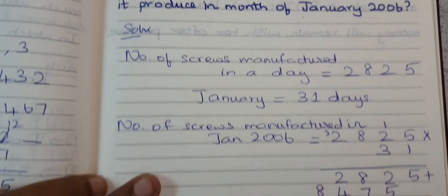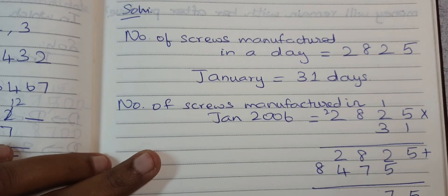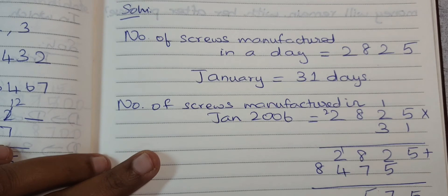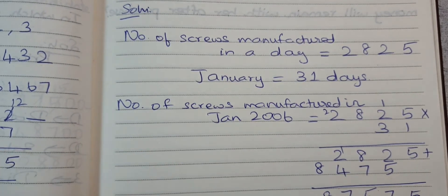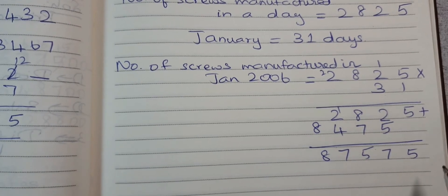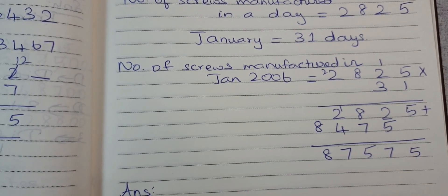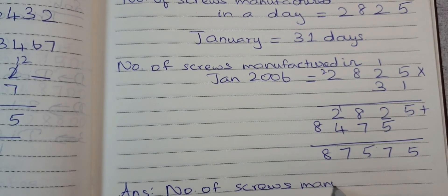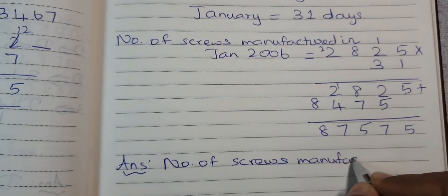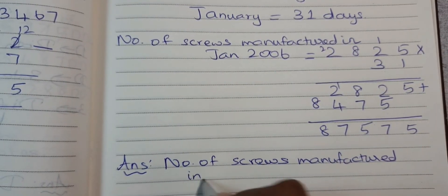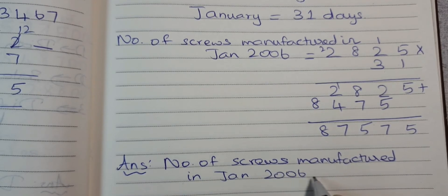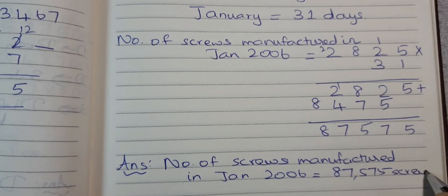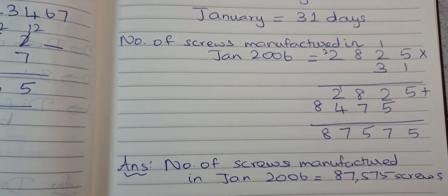Now add the two partial products: 5, then 7; 8 plus 7 is 15 — carry 1; 2 plus 4 is 6, plus 1 is 7; next is 3. So the answer is 87,575. The number of screws manufactured in January 2006 is 87,575 screws. This is the answer for this problem.